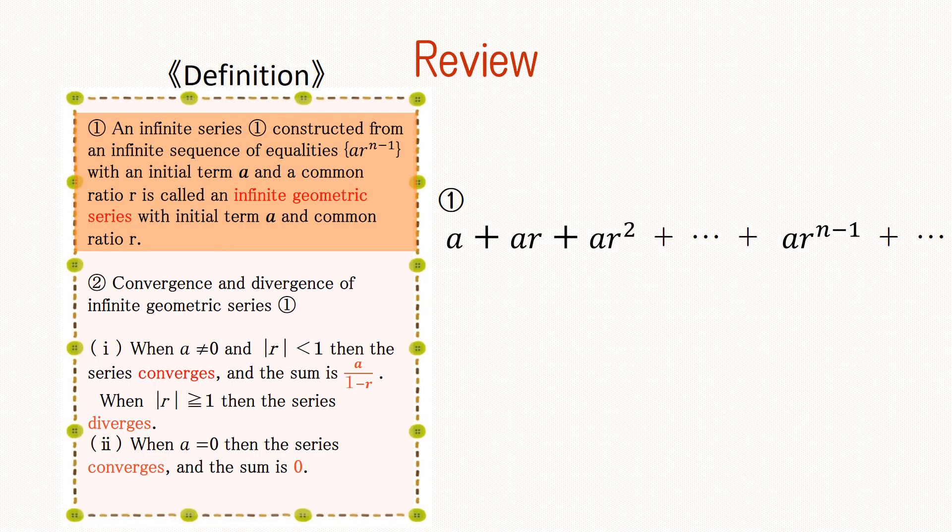Finally, let's review what we have learned. An infinite series such as the one shown on the right, made from an infinite sequence of equalities a·r^(n-1) with an initial term a and a common ratio r, is called an infinite geometric series with initial term a and common ratio r.